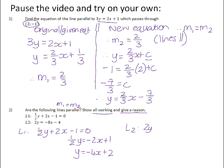Line 2, 2y equals negative 8x minus 4. We need to divide through by 2. That gives us y equals negative 4x minus 2.